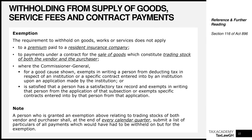A number of things are exempt from the withholding requirement. When you make a premium payment to a resident insurance company, no withholding tax applies. However, if you are making insurance premium payments to a non-resident insurance company, you are required to withhold at a rate of 5%. So payments to a resident insurance company are exempt from withholding tax, but payments to a non-resident insurance company are not.